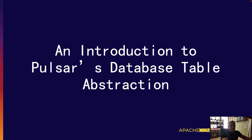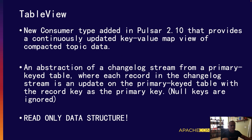Pulsar has recently added a new Database Table Abstraction of a changelog stream on a primary keyed table. I will discuss this new feature, its API, and demonstrate how to implement various SQL semantics using this table abstraction. This new Database Table Abstraction is called the Table View. It is a new consumer type added in Pulsar 2.10 release and it provides a continuously updated key-value map of compacted topic data. This interface serves as an encapsulated access pattern providing a continuously updated key-value map view of the topic data.